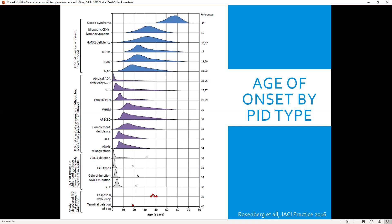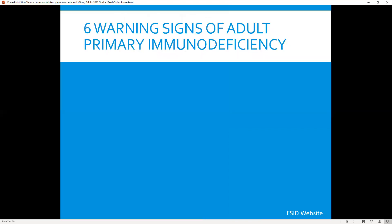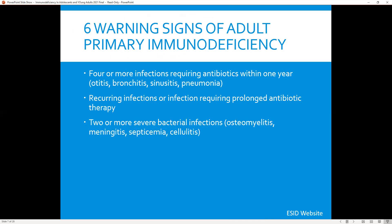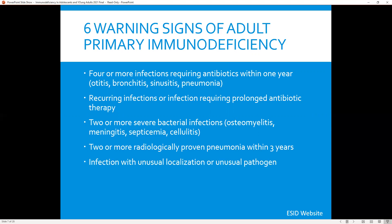The European Society for Immunodeficiency has gone one step further to define six warning signs for adult primary immunodeficiency: four or more infections requiring antibiotics within a year, recurring infections or infection requiring prolonged antibiotic therapy, two or more severe bacterial infections such as osteomyelitis, meningitis, sepsis, or cellulitis, two or more radiologically proven pneumonias within three years, infections with unusual localization or an unusual pathogen, or a history of primary immunodeficiency within the family.